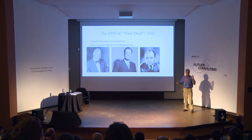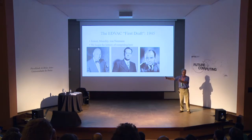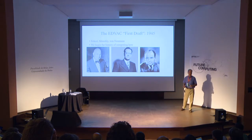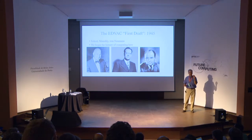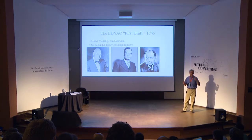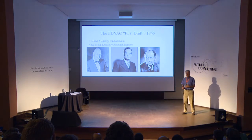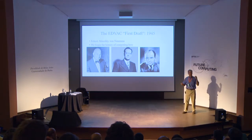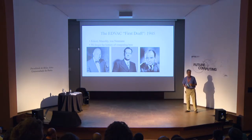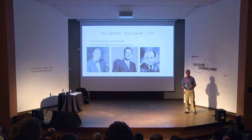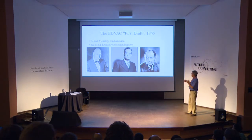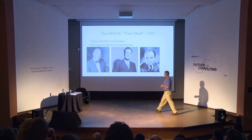The von Neumann architecture — the basis of computing — involves a separation of processor and memory with a single channel between them, which we call the von Neumann bottleneck. The other key insight: the program instructions are stored in the same place as the data. There is no distinction between the two. In a fundamental sense going back to Turing, there is no difference between program and data — they are binary bits manipulated in various ways.